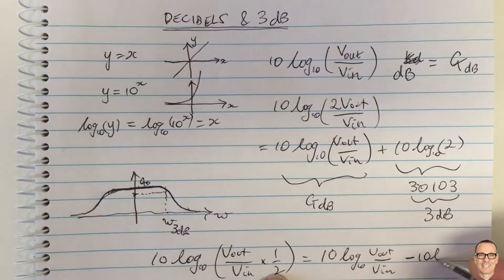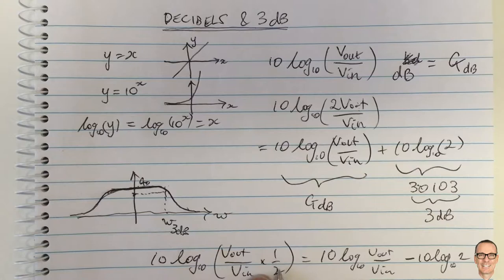...subtracting 10 log to the base 10 of 2 because it's multiplied by half is the power comes down the front the negative power so this is 2 to the power minus 1 the negative 1 comes out in front and so this is minus 3 dB...